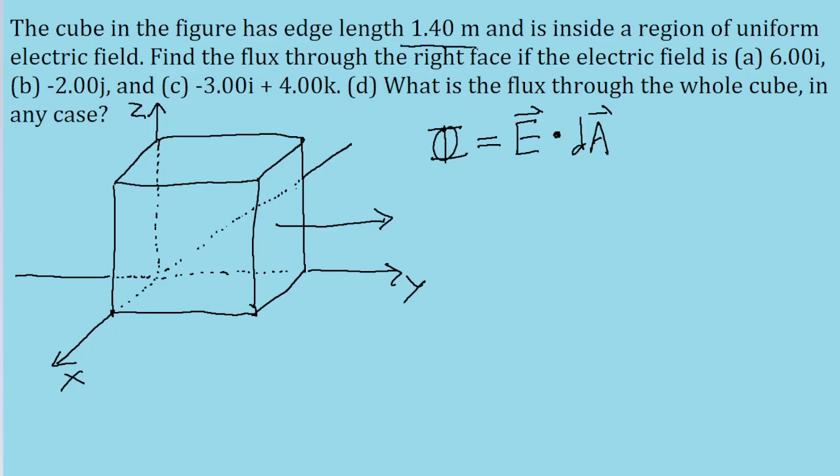The problem tells us that the edge length of the cube is 1.4 meters, and since this is the right face we're looking at, we can see that the normal vector points in the y-axis, in the positive direction. So there's going to be a positive j hat unit vector there. So dA is then going to be equal to the square of 1.4 meters in the j direction.